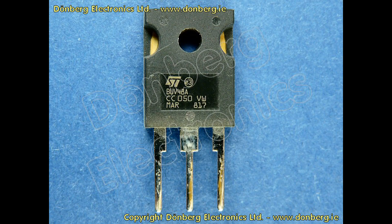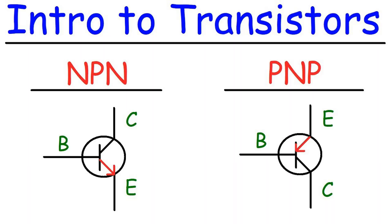Voltage Compatibility: NPN and PNP transistors have different voltage compatibility with respect to the power supply voltage. When using NPN transistors in a common emitter configuration, the collector voltage VCE should be higher than the emitter voltage VE. In contrast, for PNP transistors in a common emitter configuration, VCE should be lower than VE. Designers must pay attention to these voltage relationships to ensure proper operation.